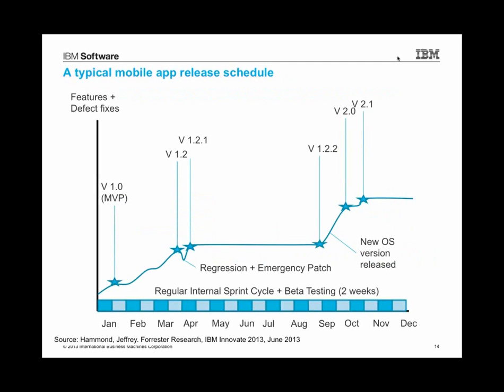Jeffrey Hammond over at Forrester has laid out a pattern of a typical app release schedule. Looking at a year's time frame broken up into regular internal sprint cycles, the releases of the mobile app are not regular — they're very fragmented. In version one, you bring out your MVP, your minimum viable product, and as you go over time, you're creating more features and defect fixes. Sometimes you regress — there was a regression and an emergency patch needed between version 1.2 and version 1.2.1. By having an agile process with constant sprint cycles and iterations, you can actually handle regressions and emergency patches more effectively, responding quicker to changing feedback.